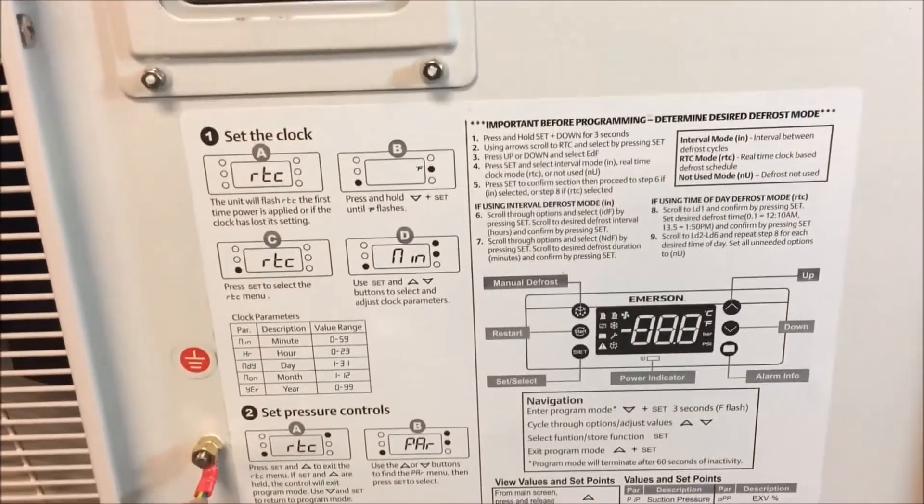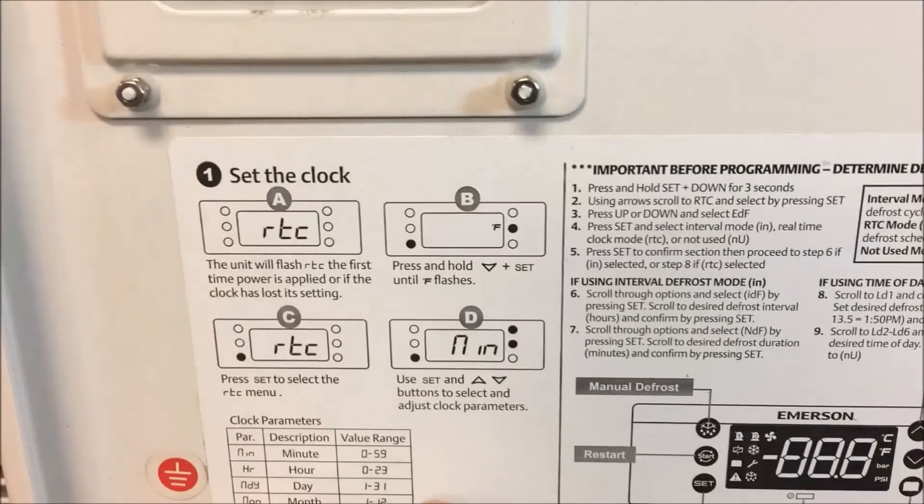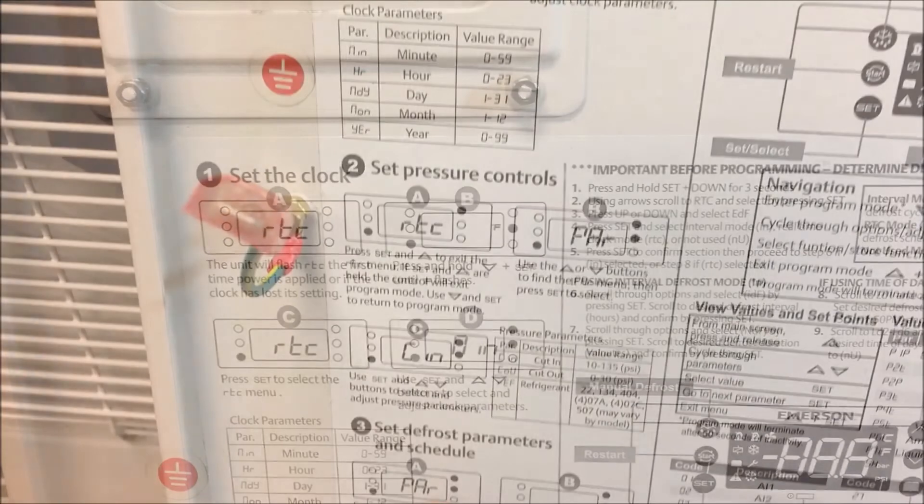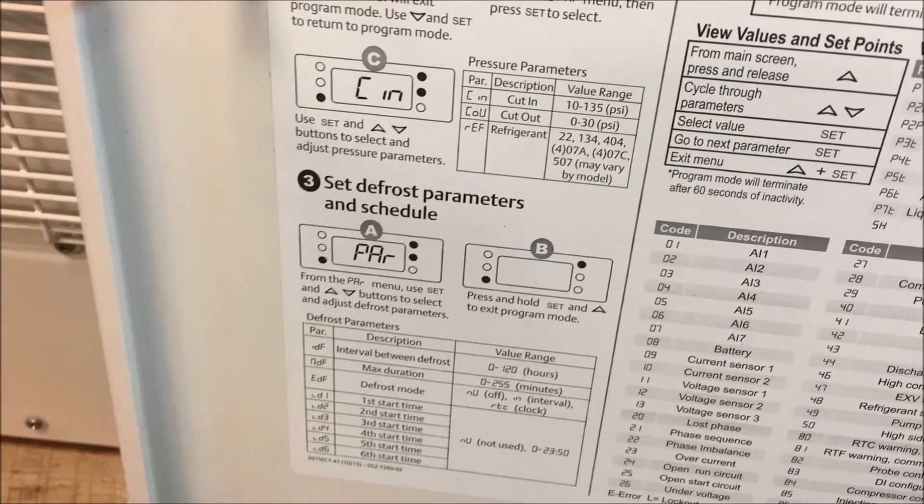To program the unit, it's really three simple steps. Number one, you need to set the real-time clock. After that, you need to set the parameters of the unit, which are like your cut-in and your cut-out and your refrigerant. After that, then your defrost settings. You can choose whether to have the defrost enabled or disabled. So really just three simple steps to do that.